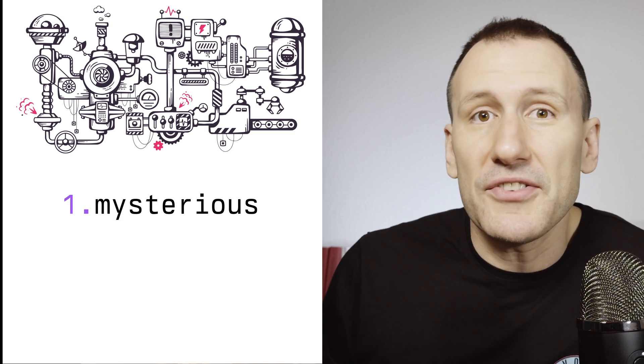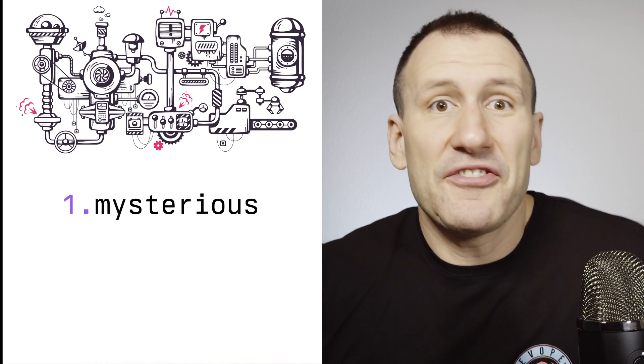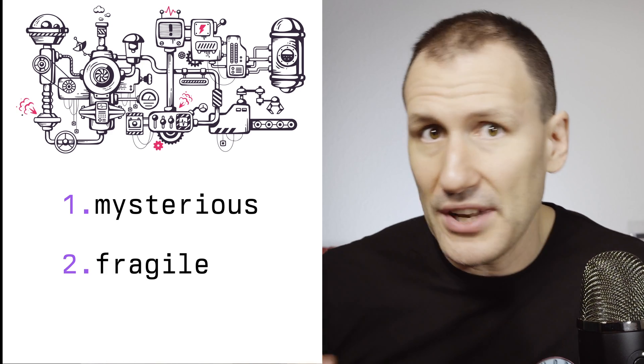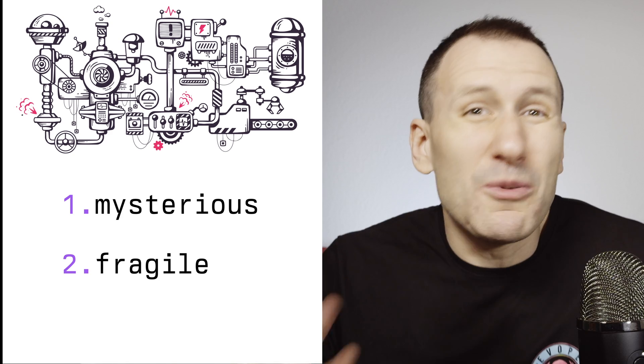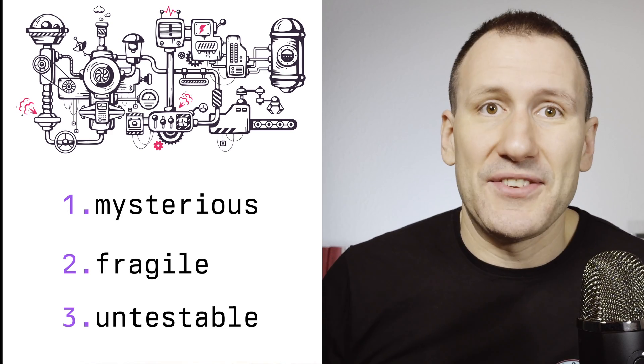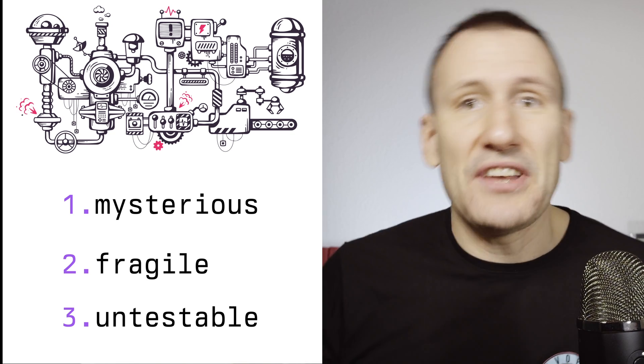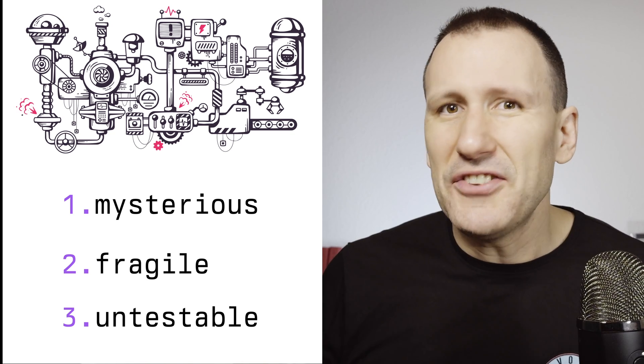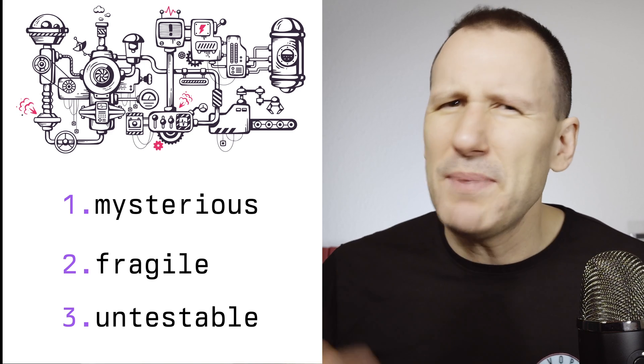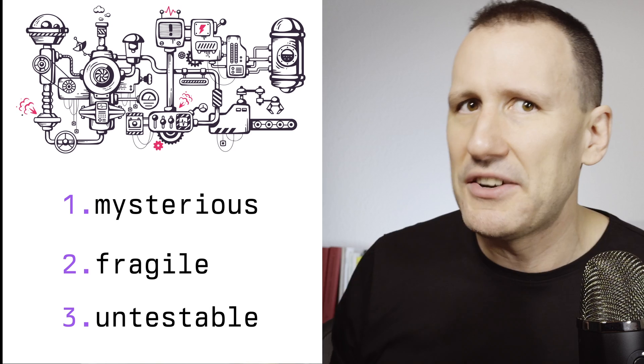That said, you can recognize easily tightly coupled systems because they are very difficult to understand because it's hard to reason about how things are interconnected. They are fragile because if you don't know how things are interconnected, you never know what will break if you change one thing over there. And they are also very hard to test because if X is dependent on implementation of Y, well, you got to test both at once. And it's often not just X and Y. For bigger systems, it's usually the whole alphabet from A to Z and probably some digits are in there too.